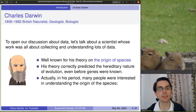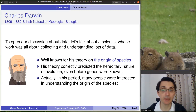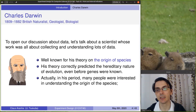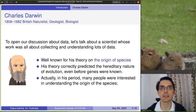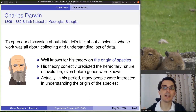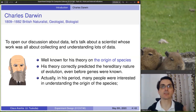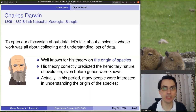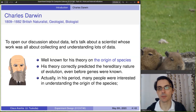Before we start, let's talk about one scientist who was all about gathering and understanding data — Charles Darwin, I guess many of you know him. Charles Darwin is very well known for his theory on the origin of the species, which describes how through the process of evolution we got the many different species of animals in nature. His theory was very interesting when he published it because it correctly predicted the hereditary nature of evolution — in other words, how the characteristics of parents are passed to offspring — before we knew about genes. So the discovery of genes and genetic inheritance came after Charles Darwin, which was quite interesting.